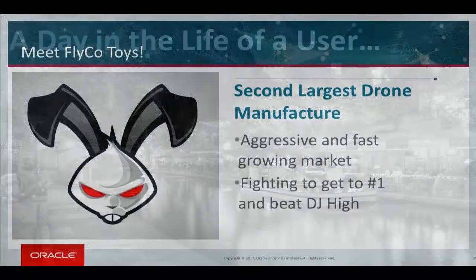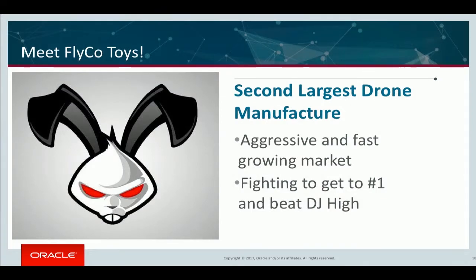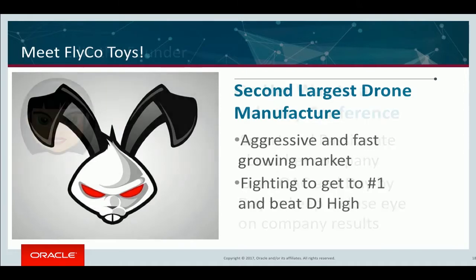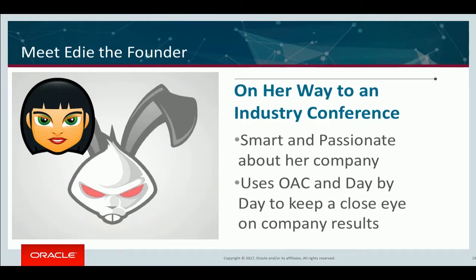Let's set up the use case. We work for Flyco, the second largest drone manufacturer in an aggressive, fast-growing market. We've all seen UPS or Amazon starting drone delivery, and we need to beat our number one competitor, DJ High. Edie — who will be played by Matt — is the founder: totally smart, passionate, and constantly on the road. She does not care about how data is stored, queried, or whether it's unstructured or dirty. She just wants an answer. She uses OAC and Day by Day to keep a close eye on company results. The quarter is closing — she needs to know what's happening and why, and wants it instantly.